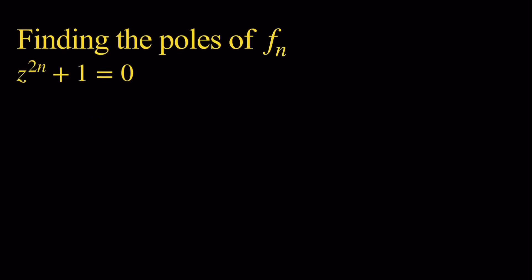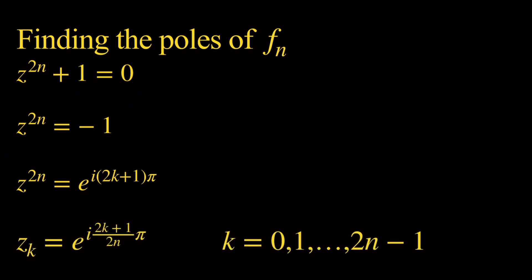To find the poles, we're going to solve the equation p sub n of z equals 0, which means z to the 2n plus 1 equals 0. We subtract 1 from both sides, then use Euler's formula to express negative 1 as a complex number: e to the i times 2k plus 1 times pi. Taking the root, we find that the solutions are z sub k equals e to the i times (2k plus 1) over 2n times pi, where k goes from 0 to 2n minus 1.